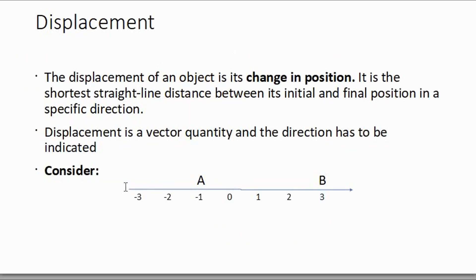Now we're going to move on to the definition for displacement. Displacement of an object is its change in position. It is the shortest straight line distance between its initial and final position in a specific direction. So displacement is a vector quantity, and direction has to be indicated.